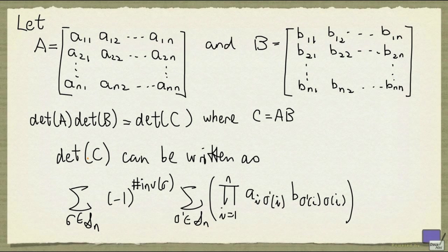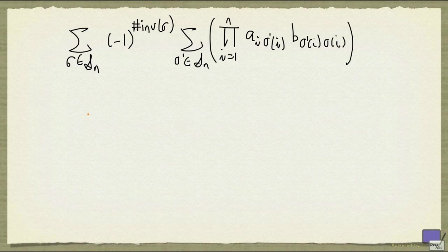Now in the previous video, we saw how we can simplify the determinant of C down to this. So what we need to do now is to show that this is in fact determinant of A times determinant of B. I'll just give you an overview of what the required steps are. You can fill in the rest of the details.